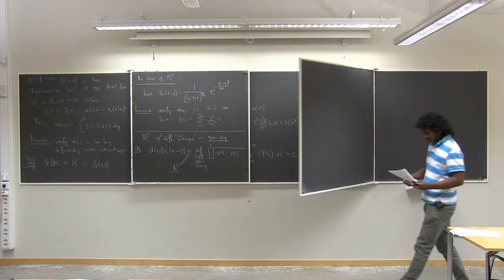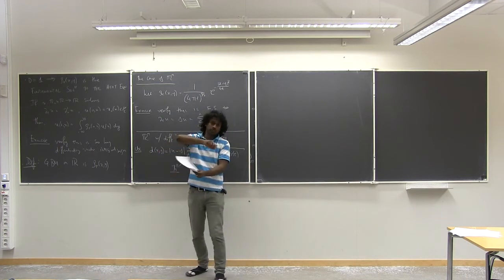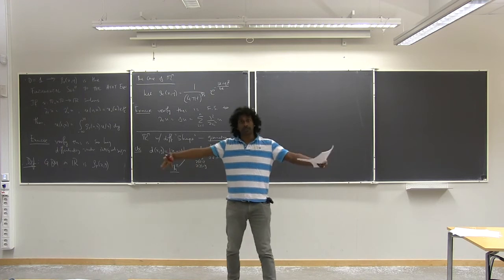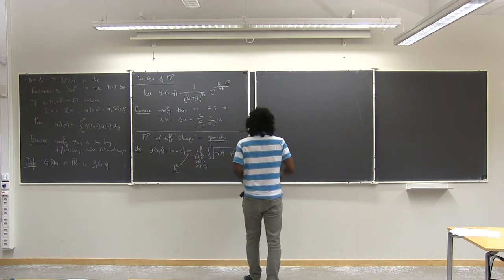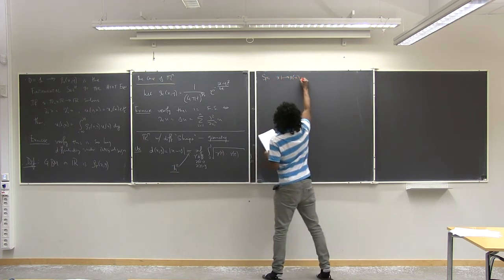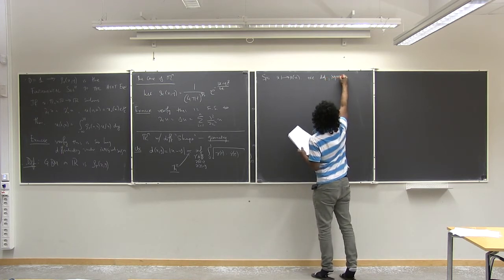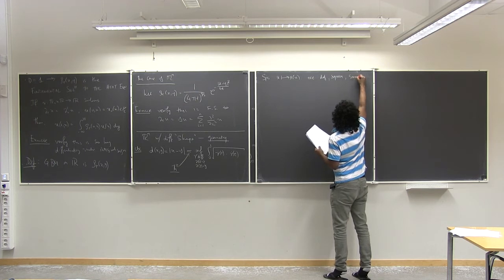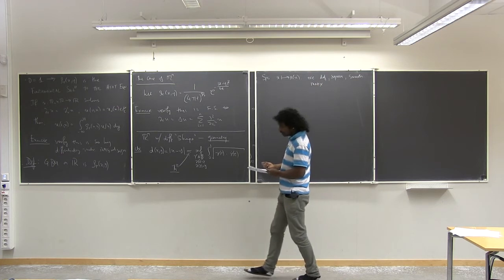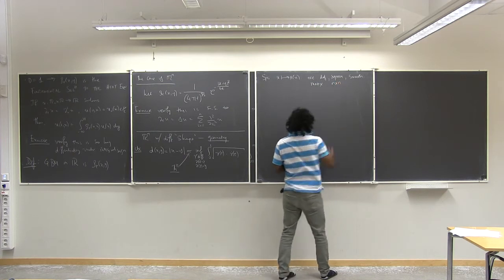So, motivated by this notion of distance, let me now try and change the distance of Euclidean space. So, we're going to keep Euclidean space as a set, we're going to keep it fixed, but we're going to give it a different shape. So, suppose that x mapping to A of x is a positive definite, symmetric, smooth matrix. So, at each x, it's going to be a matrix, an n by n matrix.